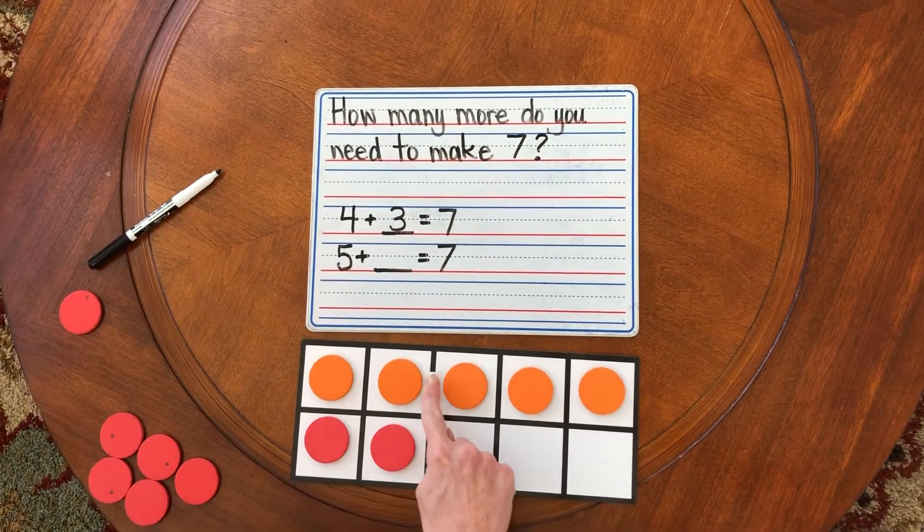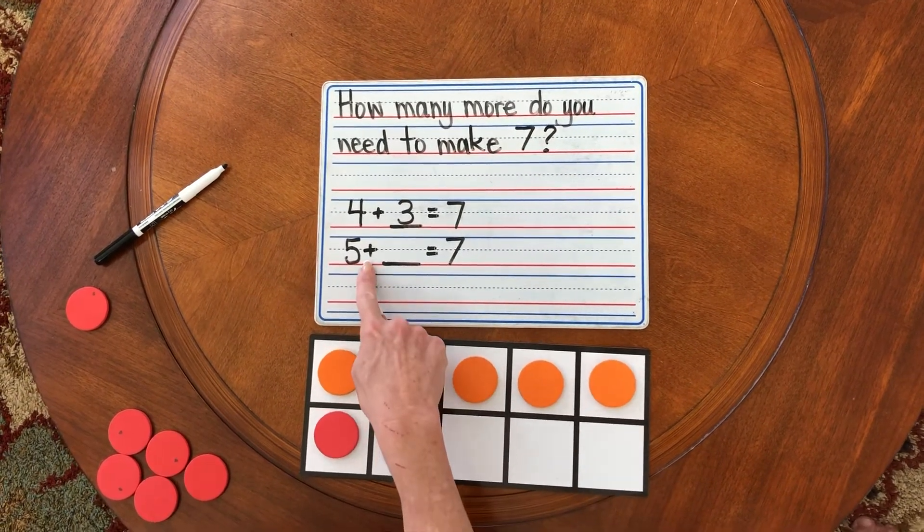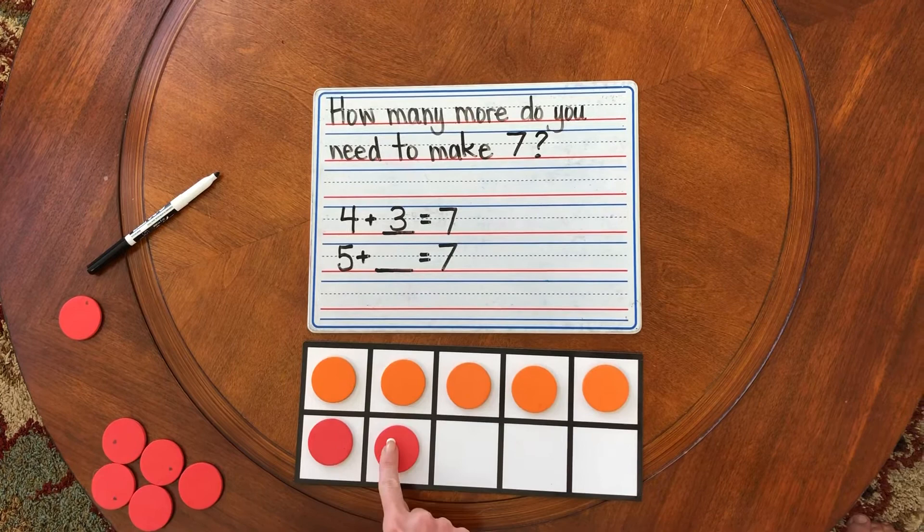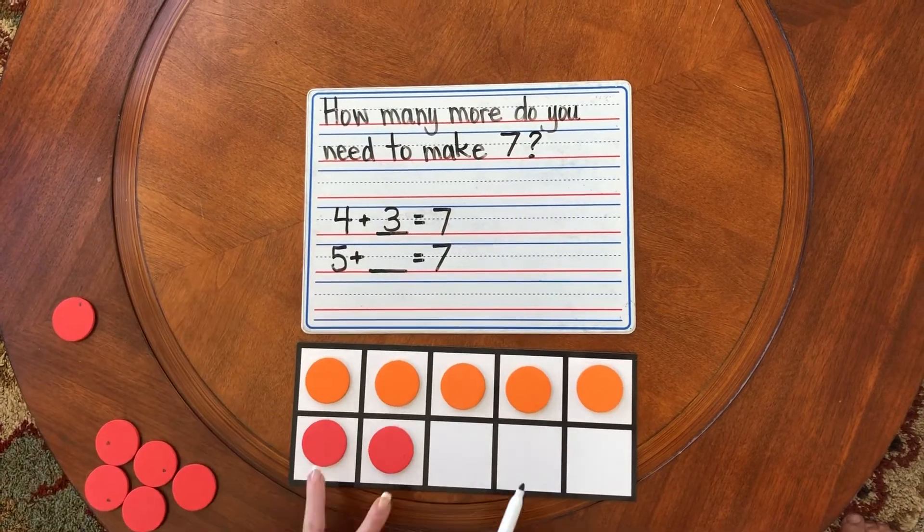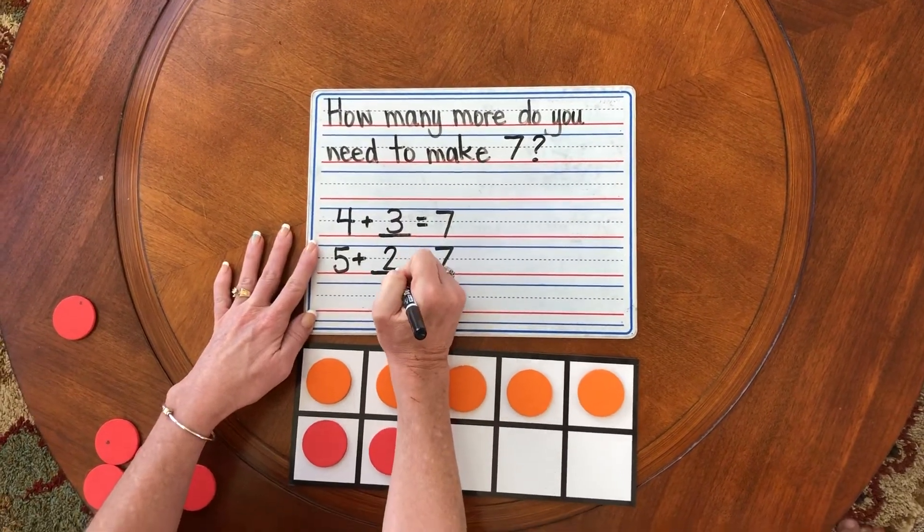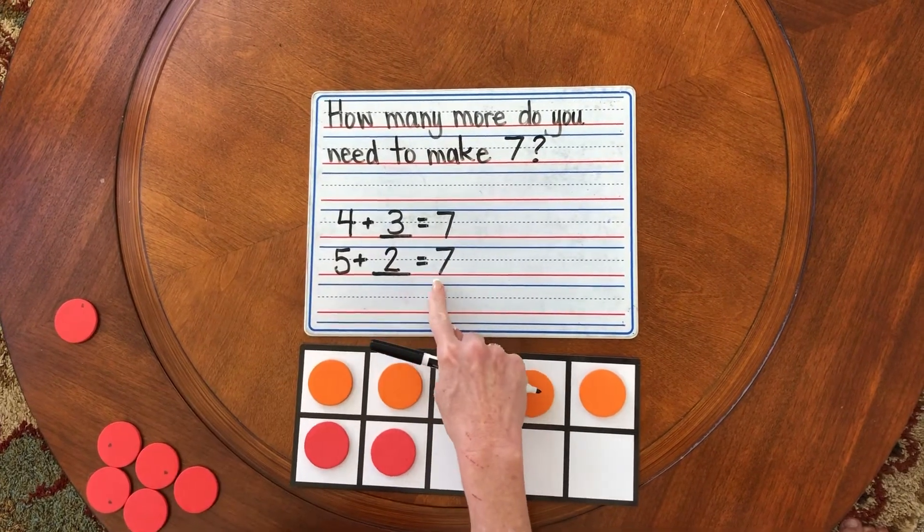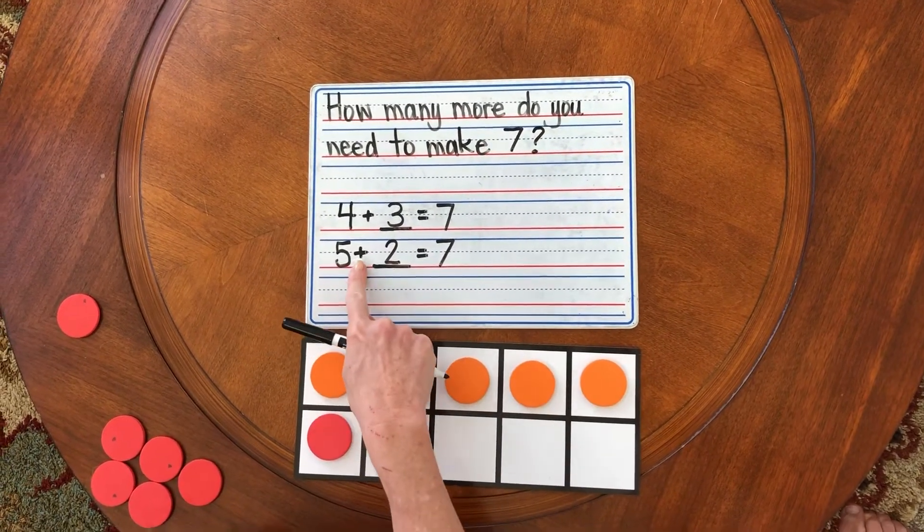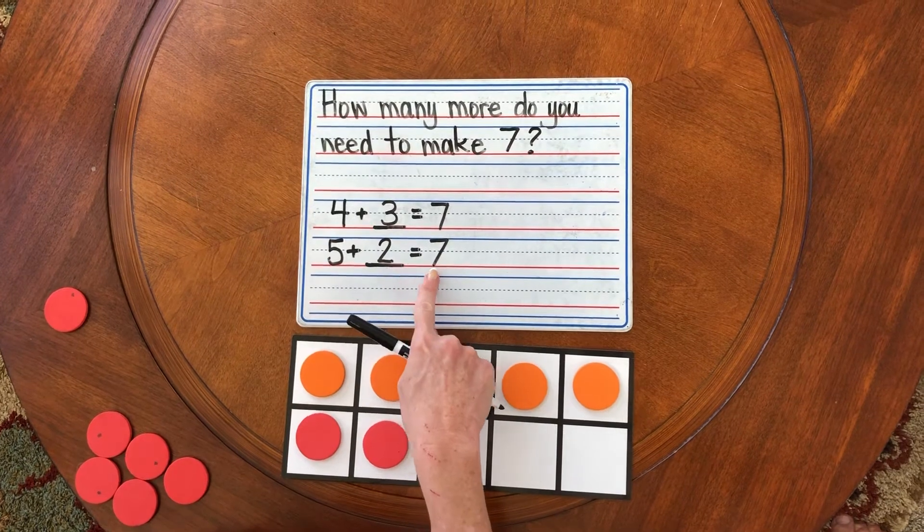Five orange counters plus one, two. Two red counters equals seven. Five plus two equals seven.